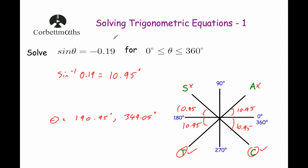Obviously these are rounded, but approximately that. So just because it's a negative, you still do the inverse sine of the positive value — the negative sign just tells you which quadrants to go to to get those solutions.